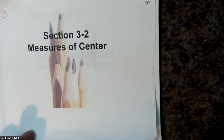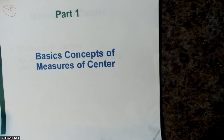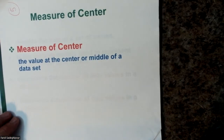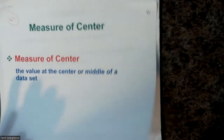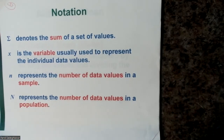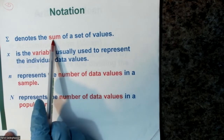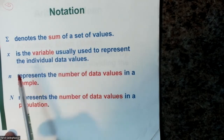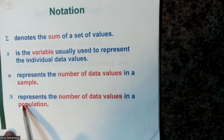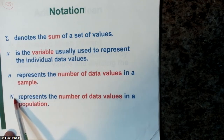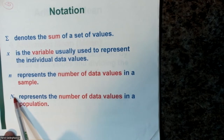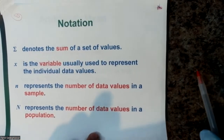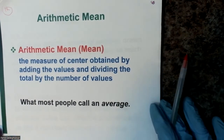Section 3.2 deals with measures of the center. The value at the center or middle of a data set. These are some symbols we use in statistics: Σ (sigma) is the Greek letter for sum; x is the variable used for individual values; n represents the number of data in samples; and capital N is the population size. Formulas are the same whether it's a sample or population.